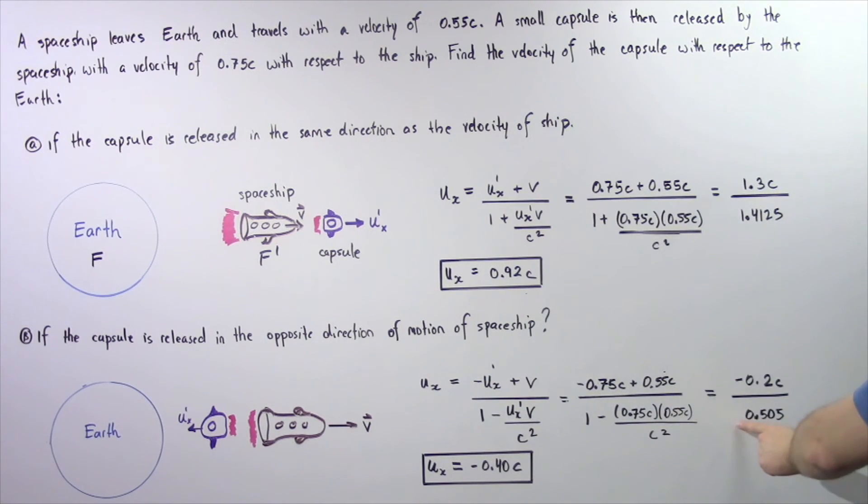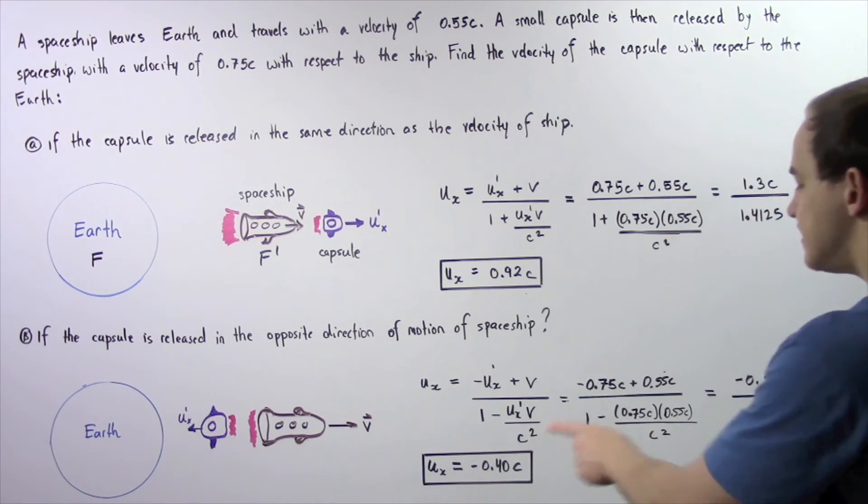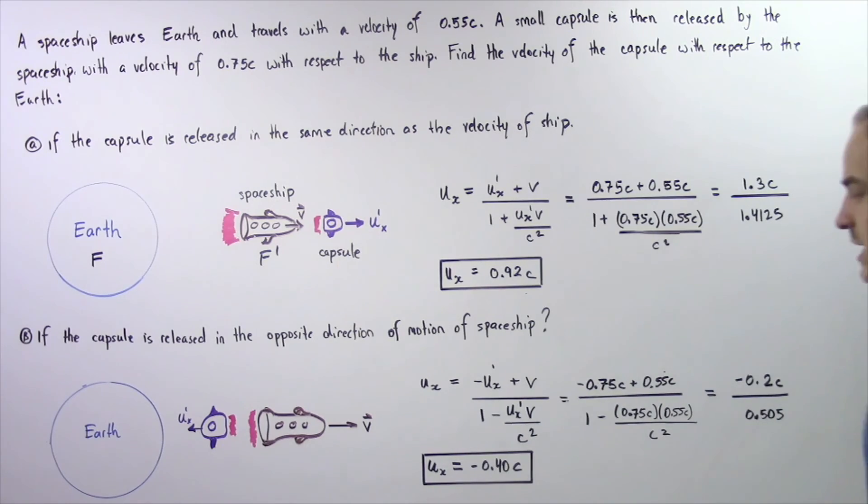The bottom gives us positive 0.505. We divide these two quantities and we get negative 0.40C.